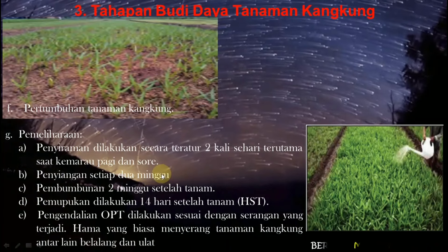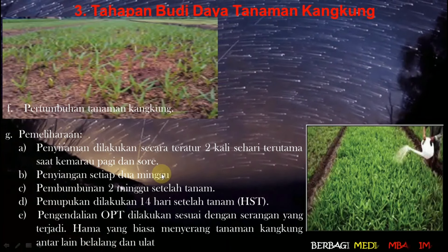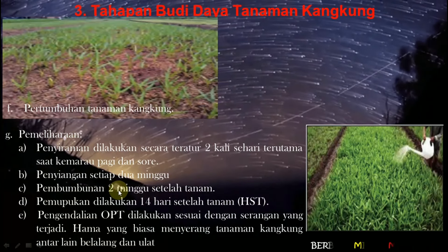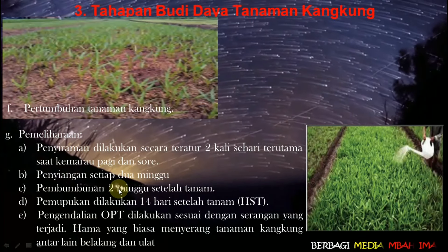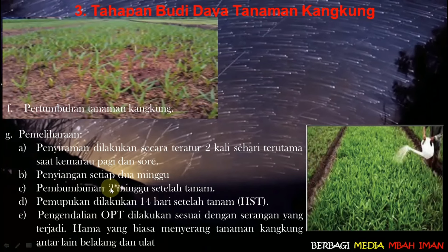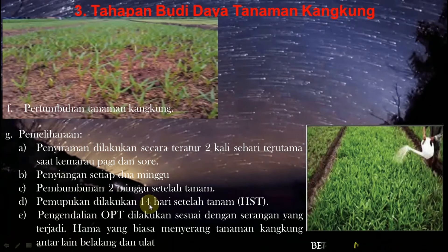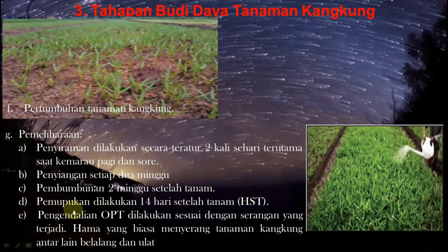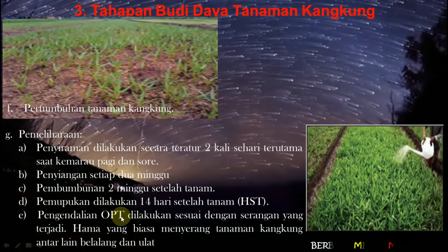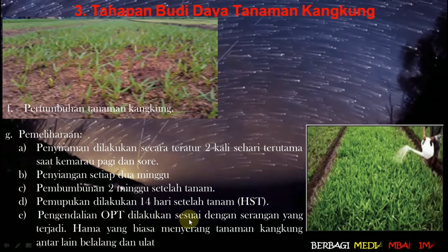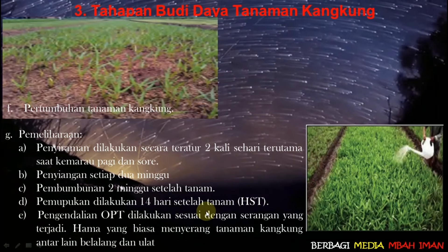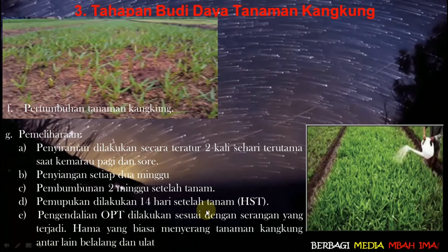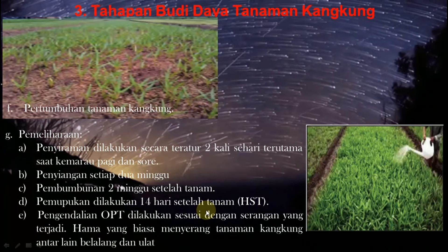Pembumbunan dilakukan dua minggu setelah tanam, yaitu pemberian tanah pada akar yang kelihatan. Pemupukan dilakukan 14 hari setelah tanam jika dibutuhkan dengan pupuk anorganik. Pengendalian OPT (organisme pengganggu tanaman) dilakukan sesuai dengan serangan yang terjadi. Hama yang biasa menyerang tanaman kangkung antara lain belalang dan ulat.